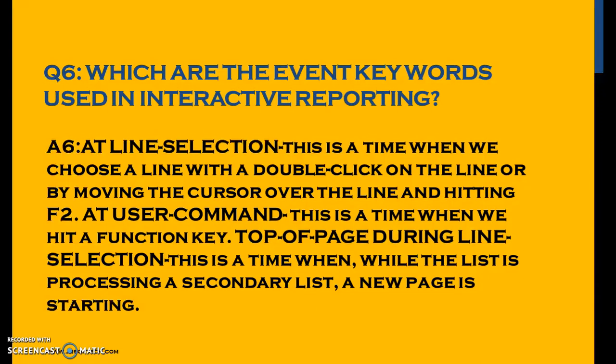Which are the event keywords used in interactive reporting? AT LINE-SELECTION is triggered when we choose a line with a double click or by moving the cursor over the line and hitting F2. AT USER-COMMAND is triggered when we hit a function key — for example, a push button on the menu bar or application keys — and the logic should be written at AT USER-COMMAND.